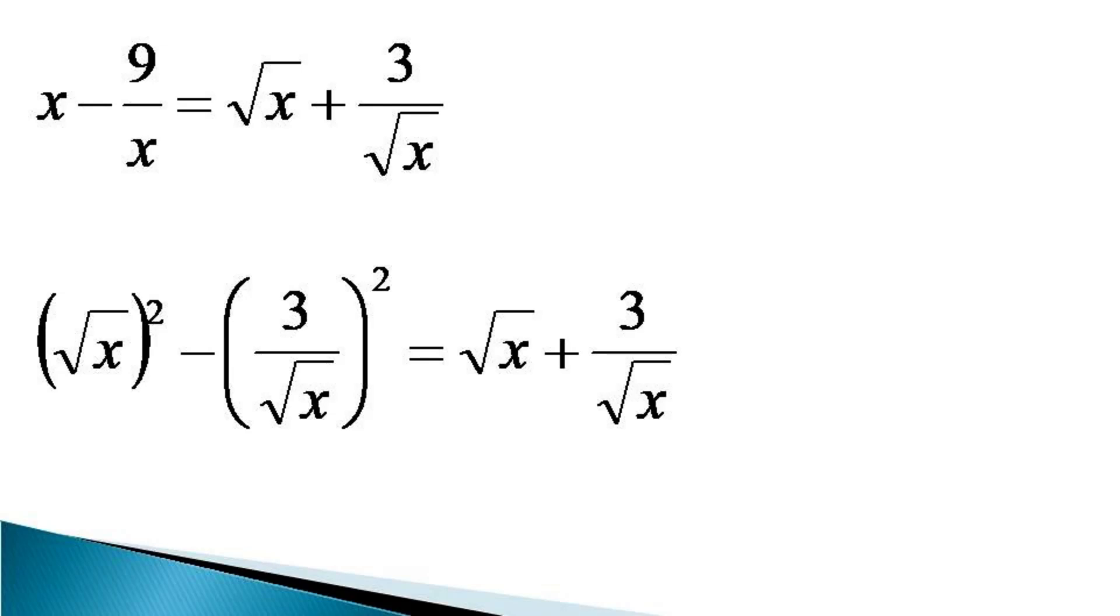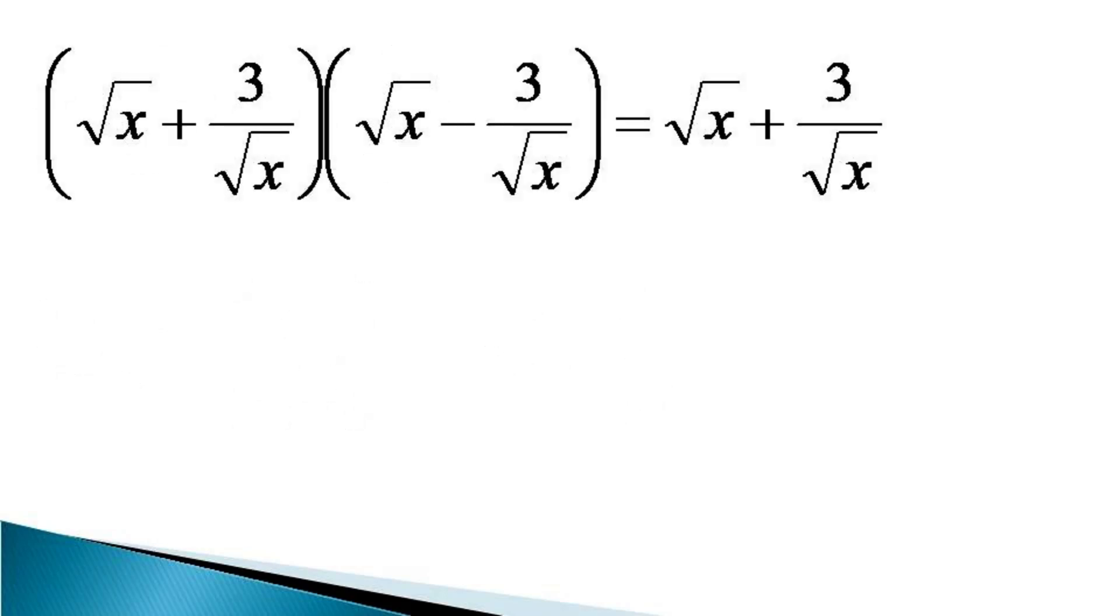And when the left-hand side is observed, this can be factorized as the sum and difference of the two quantities as root x plus 3 by root x into root x minus 3 by root x becoming equal to root x plus 3 by root x. The first term on the left-hand side, that is root x plus 3 by root x and root x plus 3 by root x on the right-hand side, they will get cancelled as they cannot be zero for all positive values of x. After cancelling these two terms, we get root x minus 3 by root x is equal to 1.